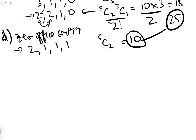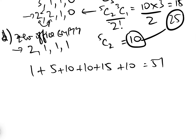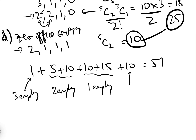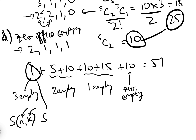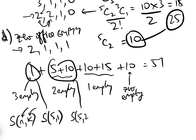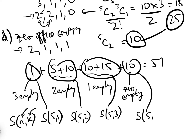The total number of ways is 1 plus 5 plus 10 plus 10 plus 15 plus 10, which is 51. These values are actually the Stirling numbers of the second kind, denoted S(n,k), which is the number of ways you can partition n distinct objects into k identical boxes. The value 1 is S(5,1); the value 15 — which is 5 plus 10 — is S(5,2); the value 25 is S(5,3); and finally the value 10 is S(5,4).